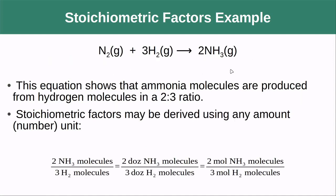We can apply that just as easily to a chemical equation. This equation shows that ammonia molecules are produced from hydrogen molecules in a two-to-three ratio. So we can have two molecules of ammonia for every three molecules of hydrogen, two dozen ammonia molecules for three dozen hydrogen molecules, or two moles of ammonia for three moles of hydrogen. We can use these coefficients not only to determine the ratios of atoms, but the ratio of moles we need — and we know that moles allow us to easily figure out mass, because it's a cleverly chosen unit.